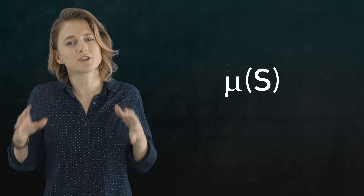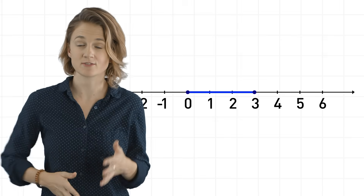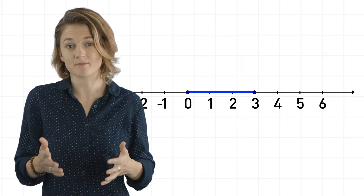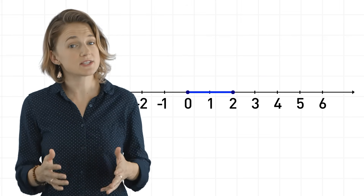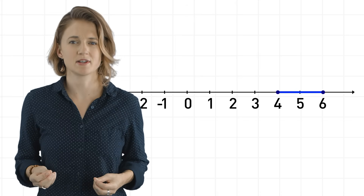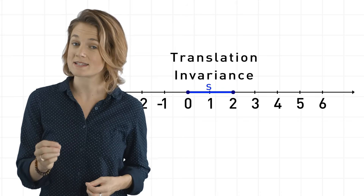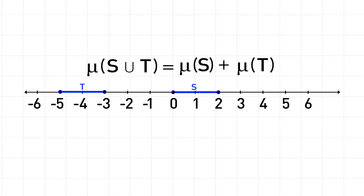Pretty much everything about the Lebesgue measure feels intuitive. The size of this line segment that extends from 0 to 3 is 3, and the size of this single point is 0. If we know this set has size 2 and we slide it over, it should still have size 2. That property is called translation invariance. The size of these two disjoint line segments — meaning the two line segments don't have any points in common — is just the sum of their two sizes. That property is called additivity.